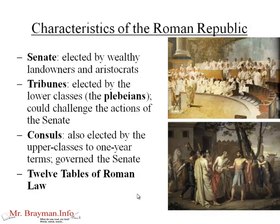They had no king, so they had to find a way to organize themselves. Number one is the Senate — elected men who are wealthy landowners and aristocrats, elected by the wealthy landowners and aristocrats. But they had to give the poor people some power, as happened in Athens and Sparta — you can't leave the poor landless people with no power. So they developed the system of the tribunes, elected by the lower classes — the so-called plebeians or plebes. The tribunes could challenge the actions of the Senate; they could veto or overturn what the Senate wanted to do.